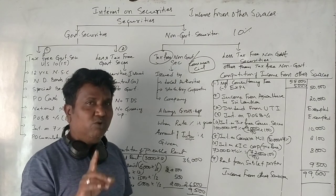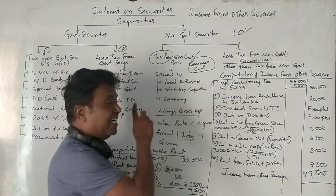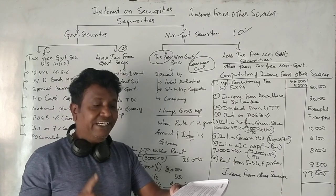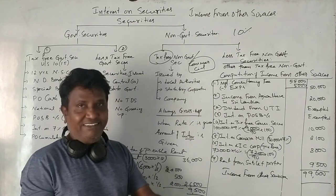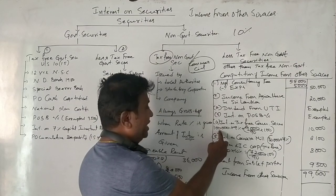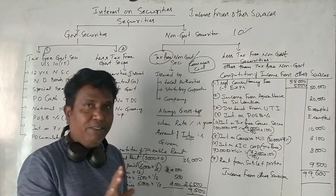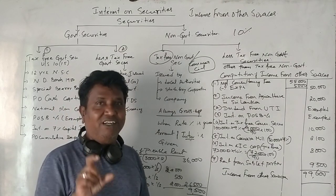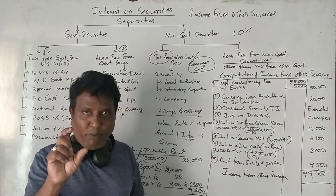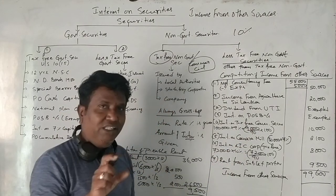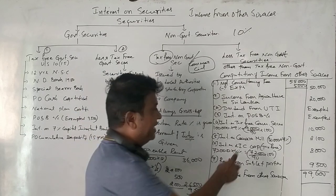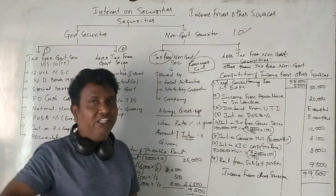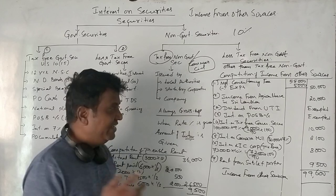For the 10% tax-free commercial securities, the investment is ₹1,00,000. The interest at 10% on ₹1,00,000 gives ₹10,000. Since it is tax-free, this ₹10,000 is the gross interest amount, and the full amount is taxable after grossing up.